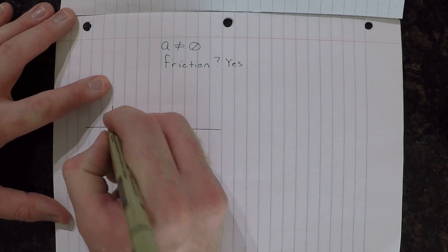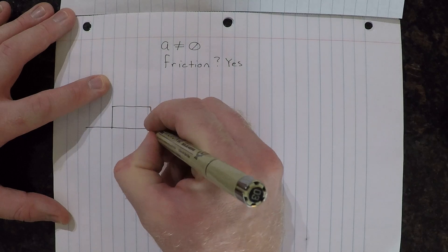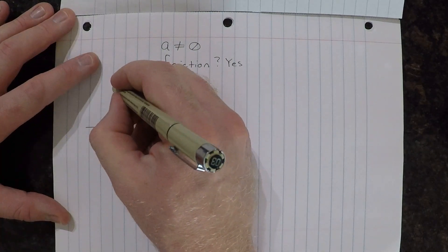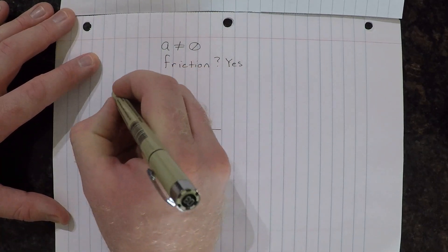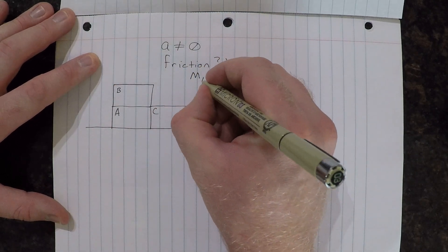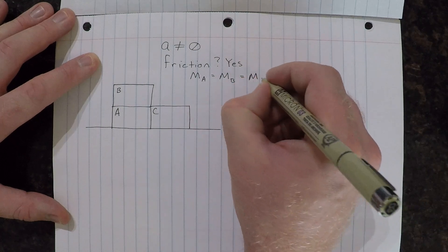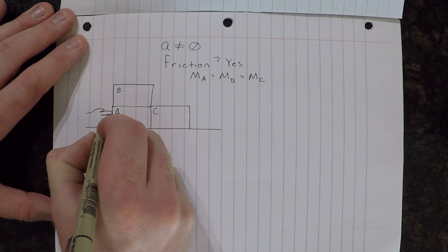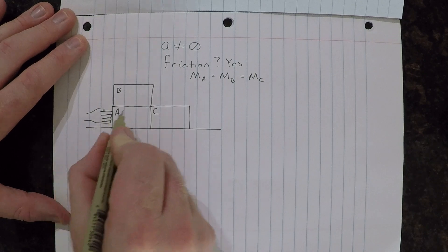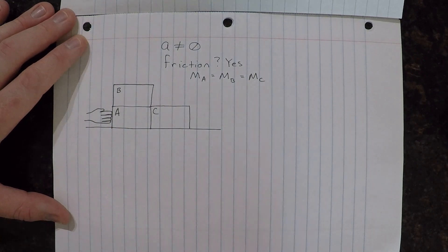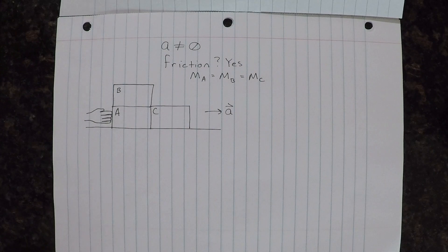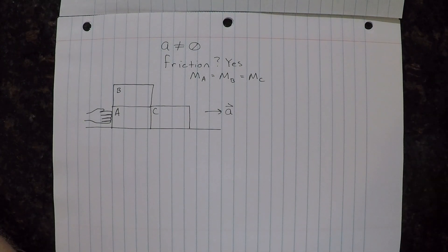What we have is three blocks, and I'll label them blocks A, B, and C. We'll say that the mass of A is equal to the mass of B, and that's equal to the mass of C. We also have a hand that is pushing on block A to the right, and this will give us an acceleration to the right. In order to figure out how the forces compare to each other, we need to draw free body diagrams for each situation.